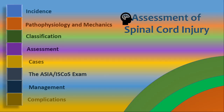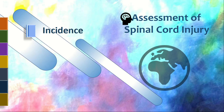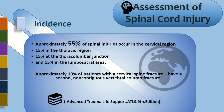Today's lecture is on assessment of spinal cord injury, a very important topic. There are many spinal cord injury cases in India and they are increasing because of traumatic injuries, so detailed evaluation of each patient is essential before going to treatment. Regarding incidence: approximately 55% of spinal cord injuries occur in the cervical region, 15% thoracic, 15% thoracolumbar junction, and 15% lumbosacral area.